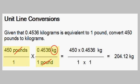So we then multiply out what we have left and we see that in the step shown on the right. We have 450 times 0.4536 and we have the one remaining unit of just kilograms in the numerator. In the denominator all we have left is 1 times 1 because the pounds cancelled out.